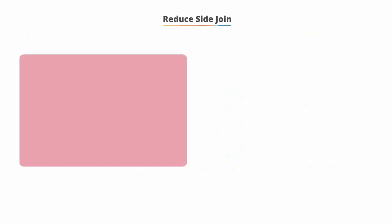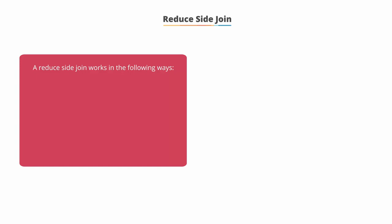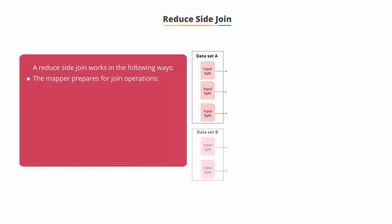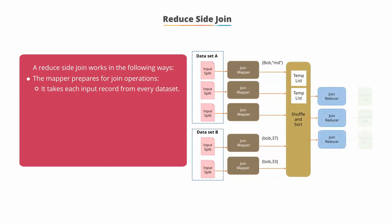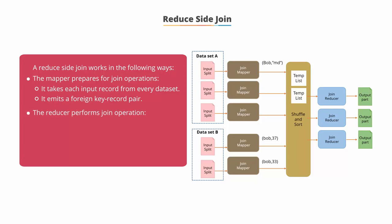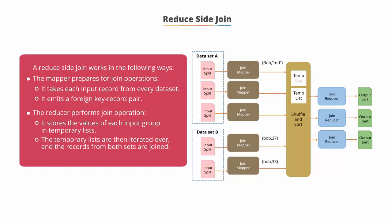A reduced side join works in the following ways. The mapper first prepares for join operations. It takes each input record from every dataset and emits a foreign key record pair. The reducer then performs a join operation where it collects the values of each input group into temporary lists. The temporary lists are then iterated over and the records from both sets are now joined.